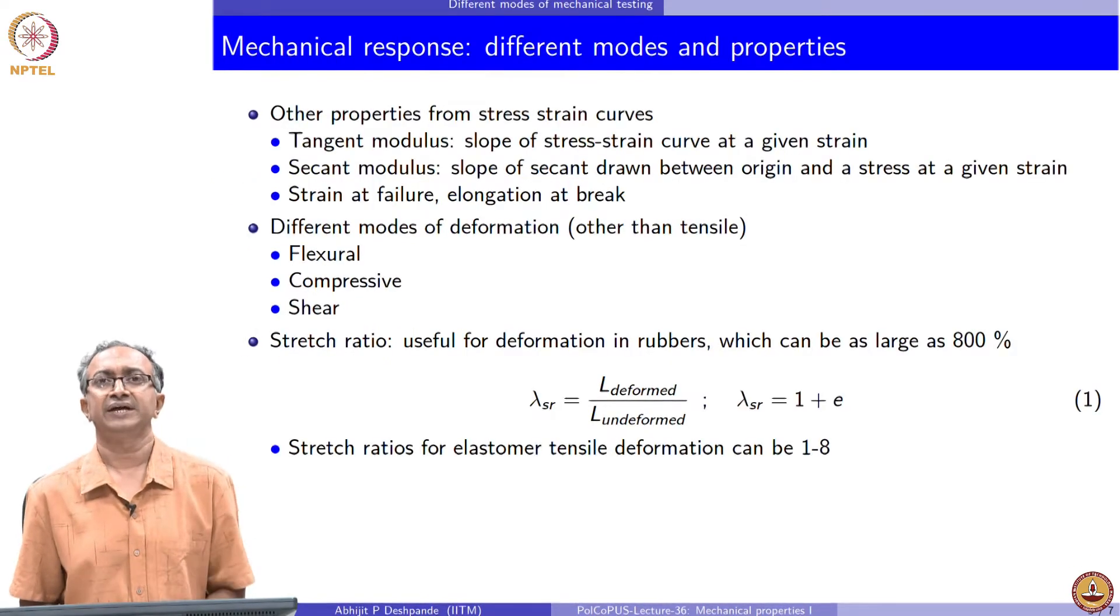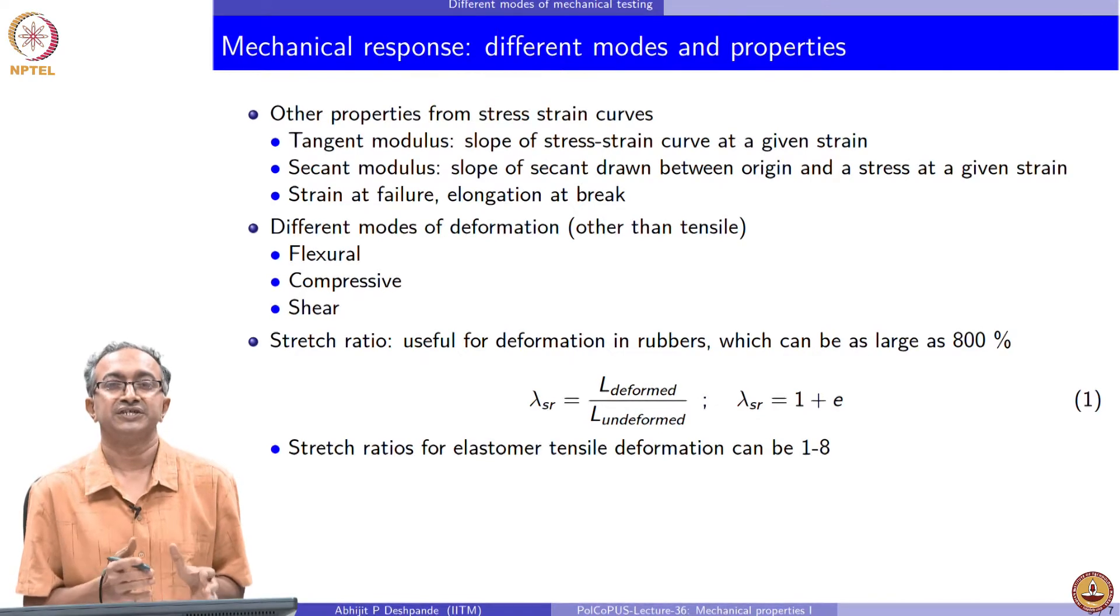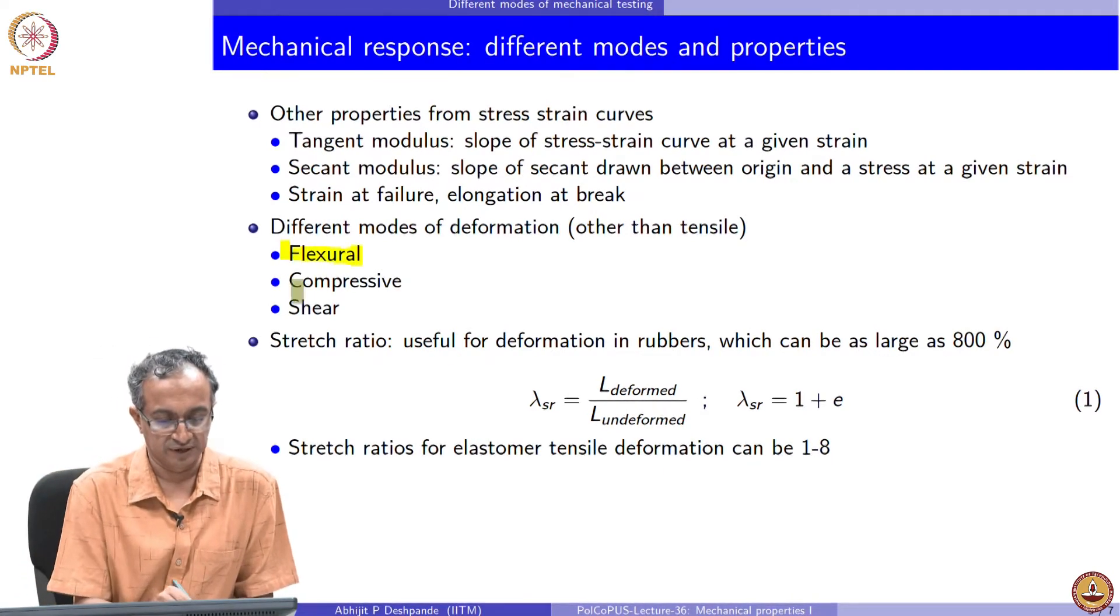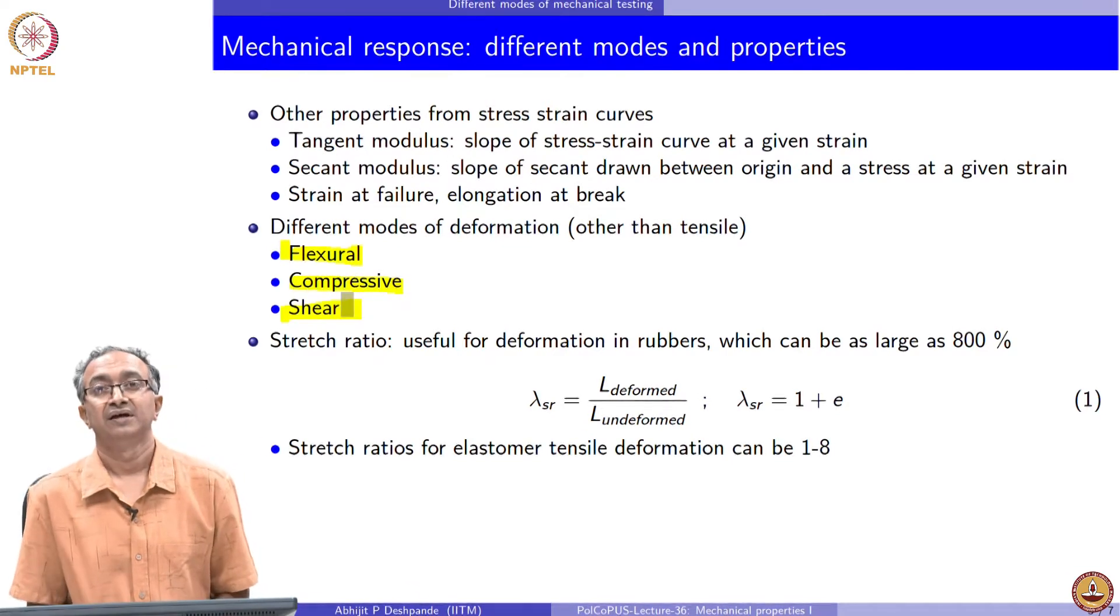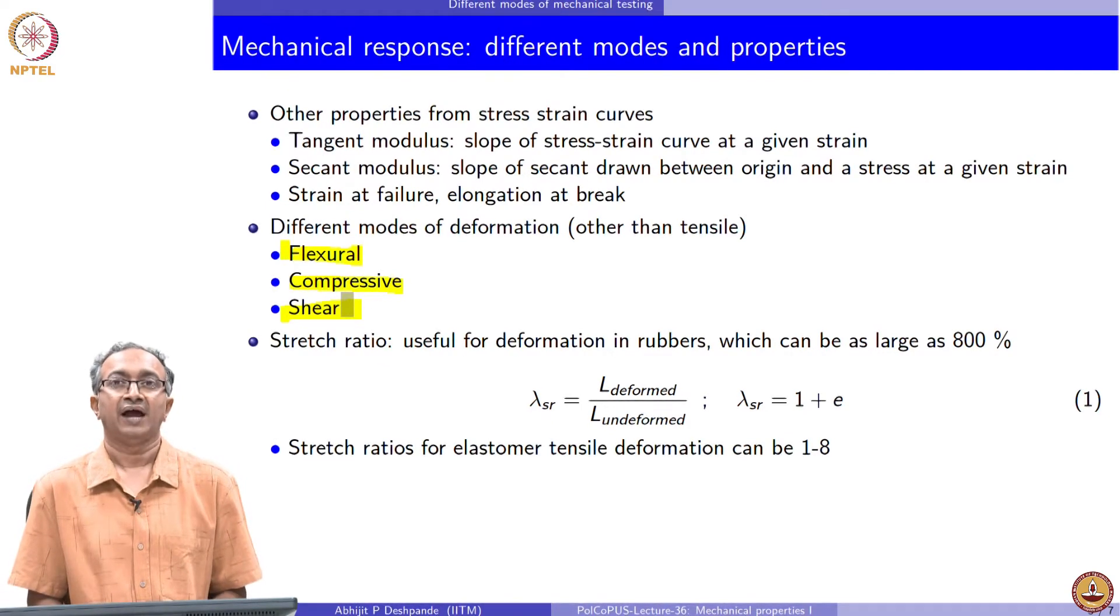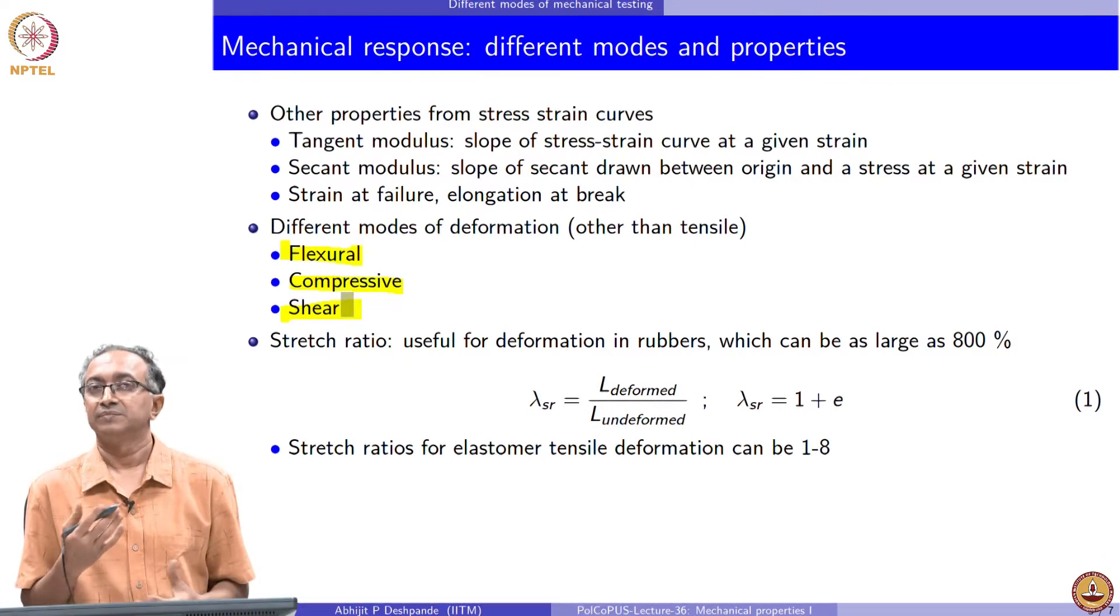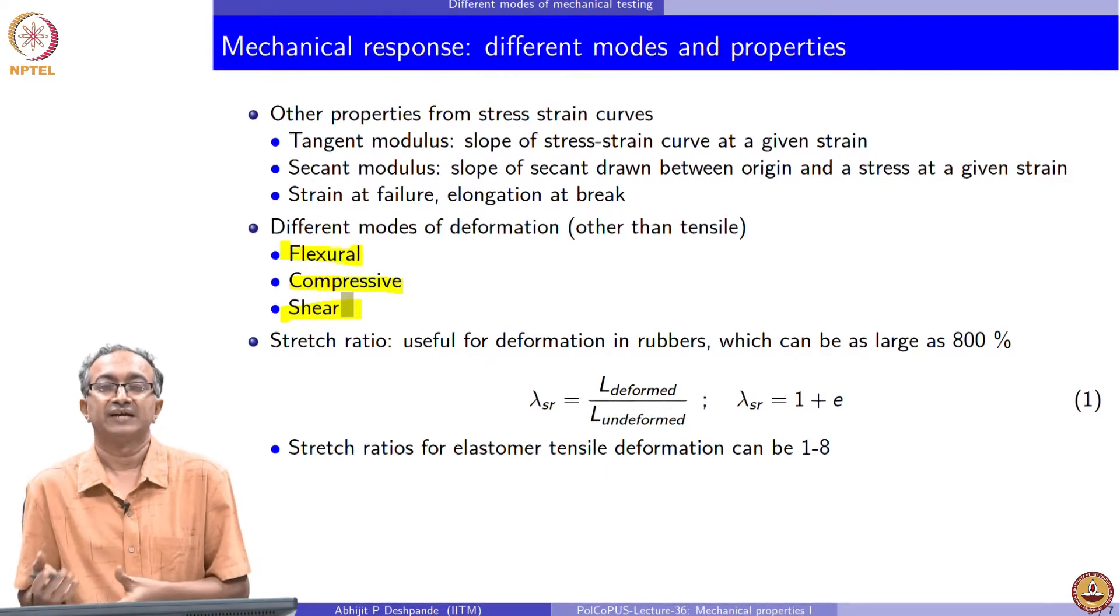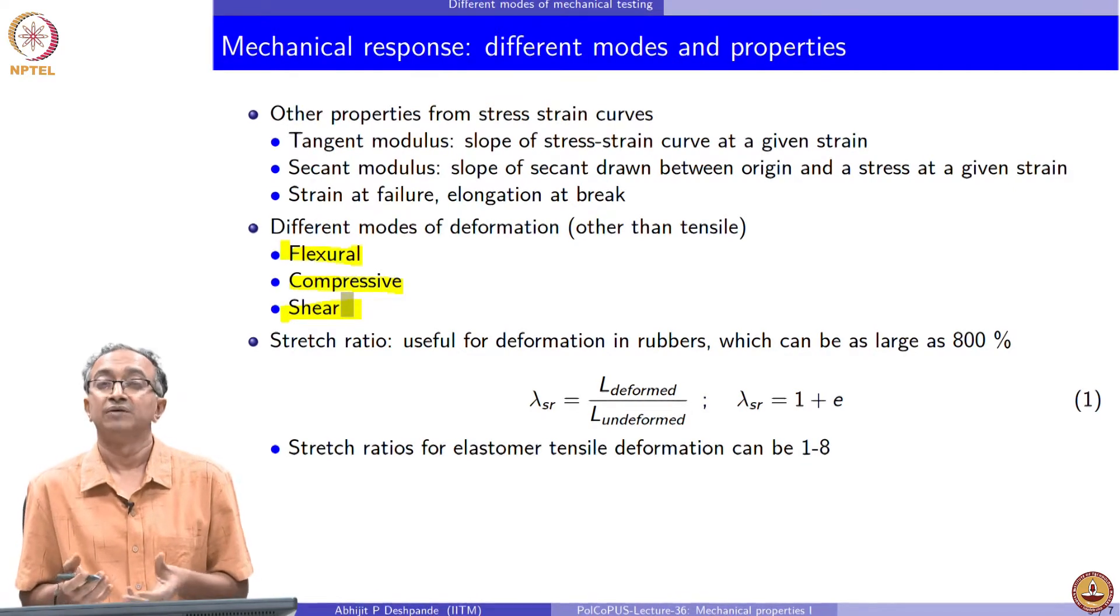Let us quickly recap the different modes or properties which are possible to be described. In the lecture on stress strain curves, we looked at extensional behavior or uniaxial tension behavior. However, we can also have a flexural or compressive or shear deformation. The same stress strain curves that we talked about could also be generated in any of these different modes. The challenge in mechanics of materials is that sometimes it is not easy to correlate the behavior of tension and flexure mode or flexure and compression mode, because of the underlying mechanisms and interactions which are present in the material.